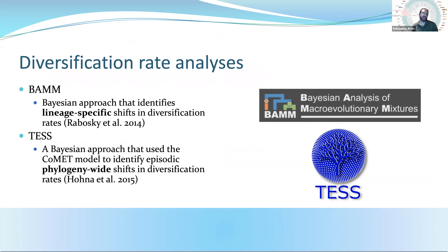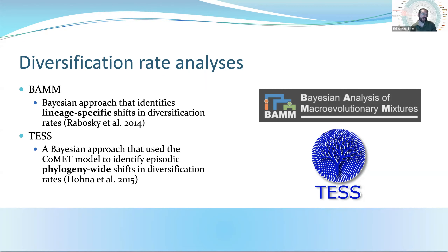To that, we applied several different types of diversification rate analyses. The two I'll show you today are programs called BAMM and TESS. BAMM, by Dan Rabosky's team, is a Bayesian approach that identifies specific shifts in diversification rates — looking at the rate of diversification (speciation minus extinction) for each branch of the phylogeny. TESS, Höna et al. 2015, is a Bayesian approach using the CoMET model to identify episodic phylogeny-wide shifts in diversification rates — essentially looking at slices of time and asking what the rates of diversification were 100 million years ago, 90 million years ago, 50 million years ago, 10 million years ago. They're both important and complementary ways of getting at the cradle versus museum question.